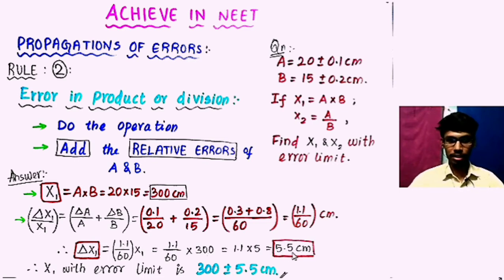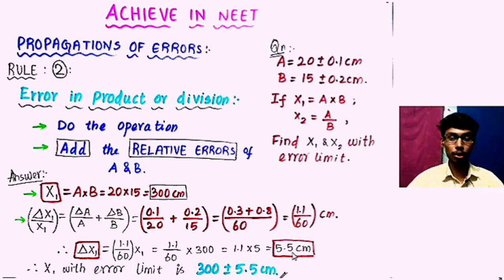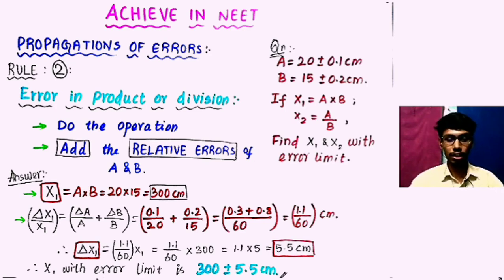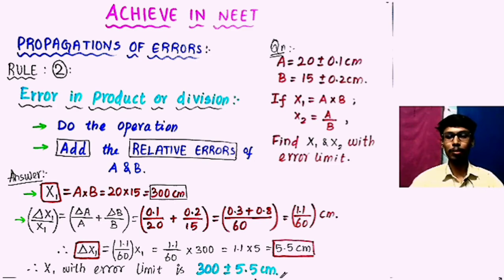So first we do the operation a into b: 20 times 15 equals 300 cm. Then we add the relative errors of a and b to get the relative error of x1. From the relative error we find the absolute error by cross-multiplying by x1. So x1 with error limit is 300 plus or minus 5.5 cm.